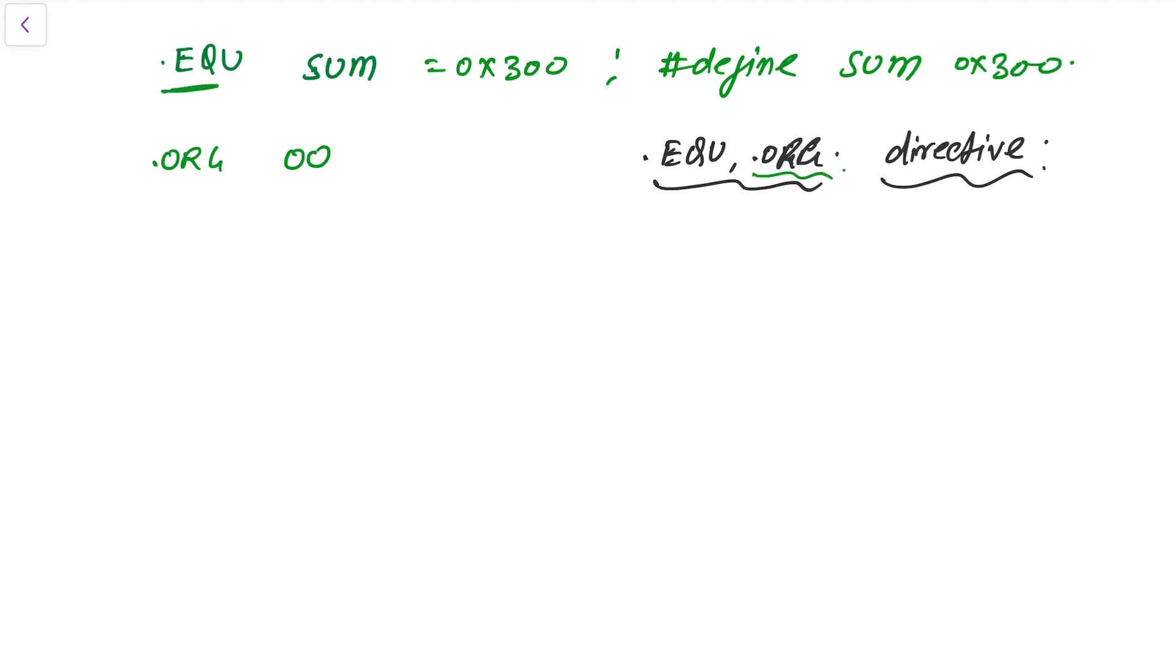This directive does not produce any code, but it gives direction to the assembler to start your code from some location, such as .ORG, or it gives dictation to the assembler to store some value in some defined variable. So we start with .ORG 00, and then we have LDI R16, 0x35, and then we have LDI R17, 0x15.